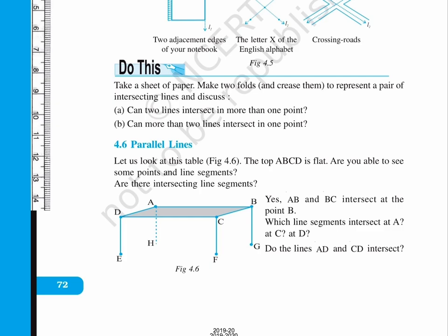4.6 Parallel Lines. Let us look at this table, figure 4.6. The top ABCD is flat. Are you able to make out some points and line segments? Are there intersecting line segments?